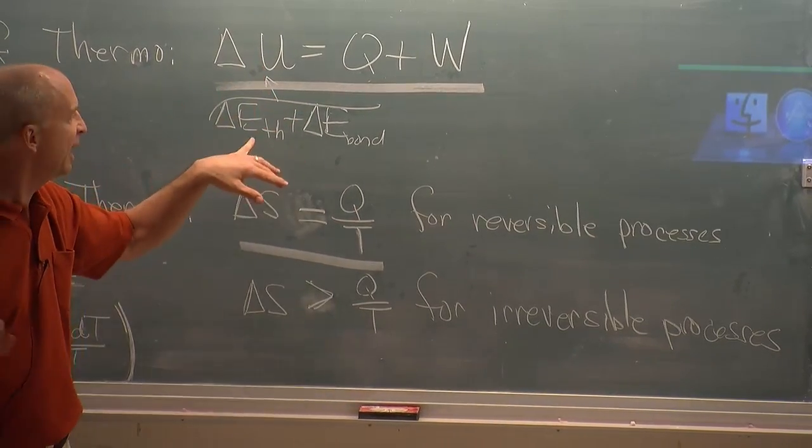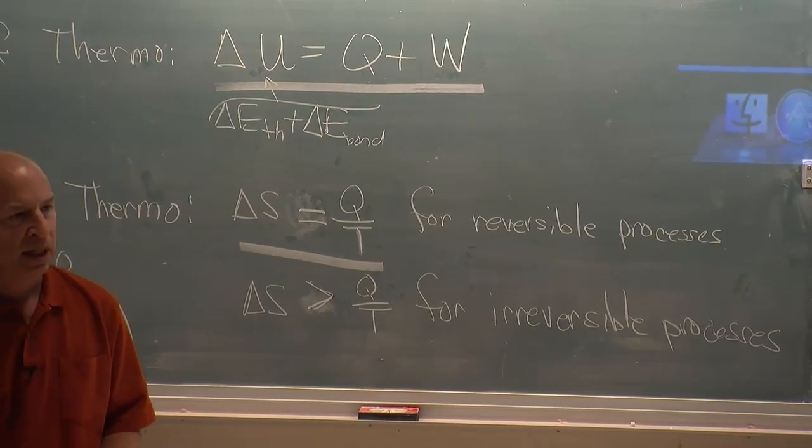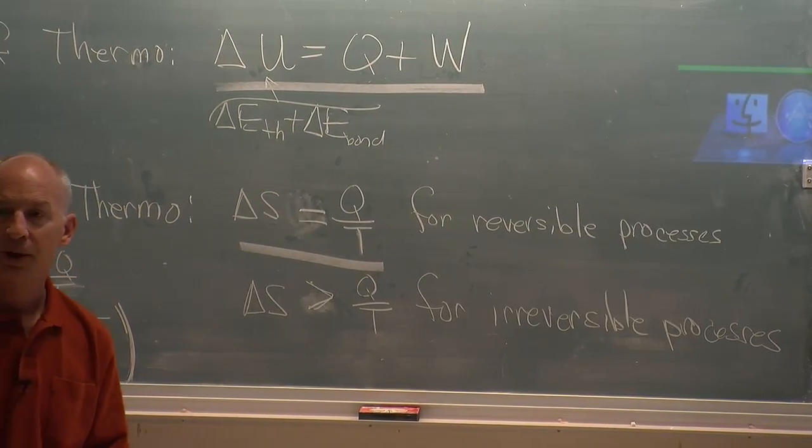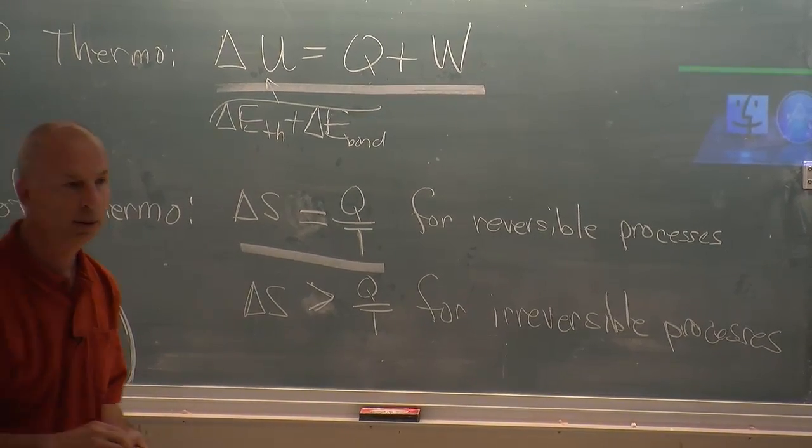So if delta U is negative, then delta E-thermal is negative, and as was pointed out, the indicator for E-thermal is temperature. So delta T is negative.